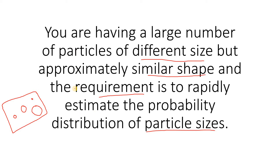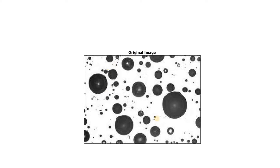So the different sizes of particles are present in the image and you are asked to get the probability distribution. For example, maybe 20 or 30 particles are coming under one size, 50 particles under another size. In the x-axis there will be some measurement related to size like radius as one unit, two unit, three unit, and in the y-axis the count of particles at each size.